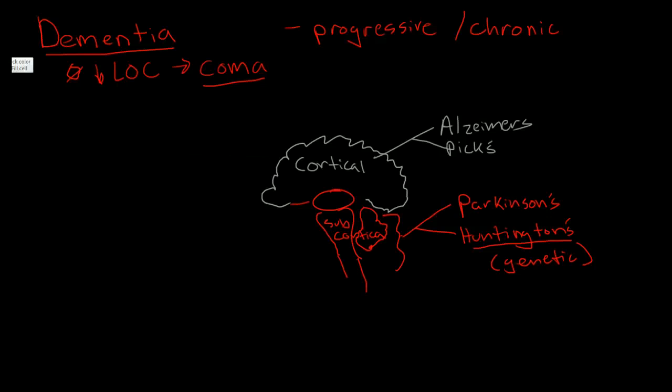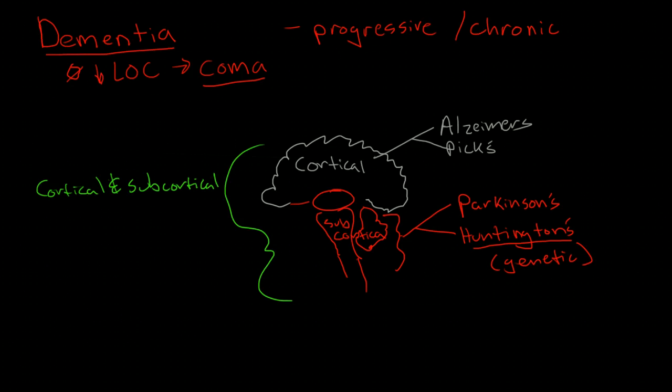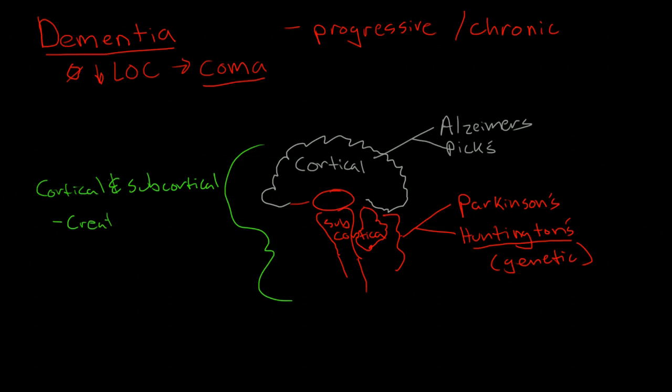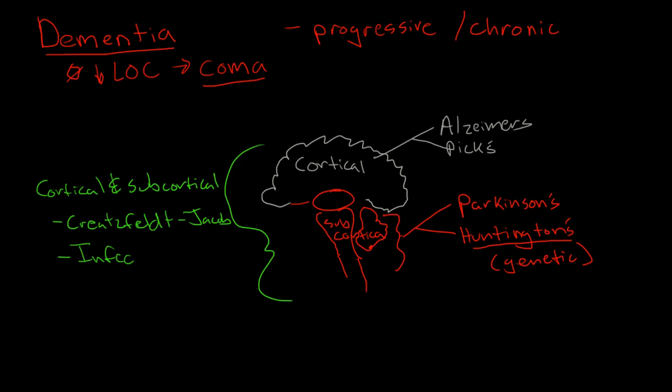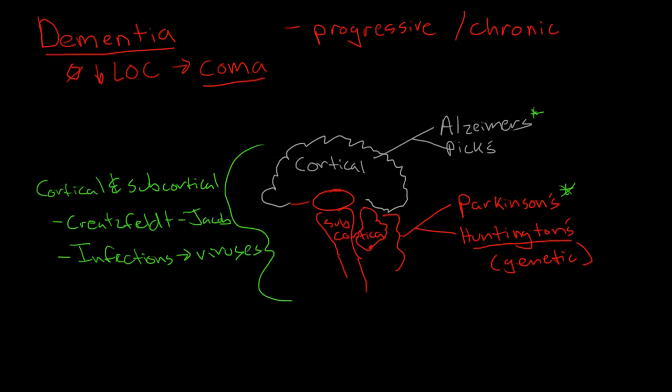And then there is a third class of dementias that are both cortical and subcortical, sort of a mixed. Dementias that involve the cortex and the midbrain are fairly rare. For instance, Creutzfeldt-Jakob disease, which I don't think there's ever been a case in the United States. There were maybe a half dozen cases in England. It's a fascinating disease, but we're not going to talk about it significantly. And then other infections, most of them viral. For this talk, we are going to focus on Alzheimer's disease and Parkinson's dementia.